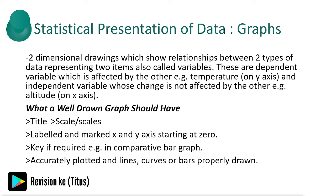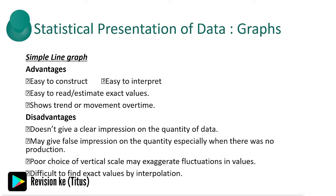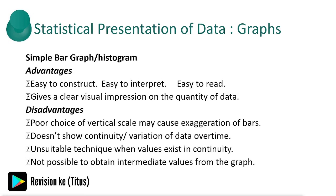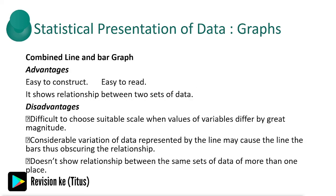We can represent the data we've collected, recorded, and analyzed using graphs, which are easier to interpret. We have a simple line graph, which is easy to construct, easy to interpret, easy to read, and shows trends — the disadvantage being it doesn't give a clear impression of the quantity of data. We have a simple bar graph, a combined line and bar graph, and that marks the end of our introduction to statistics.